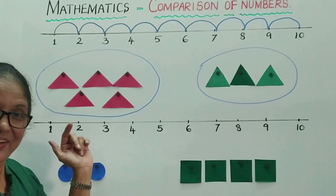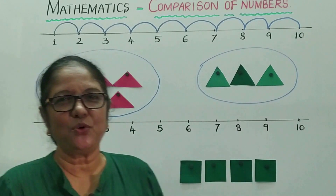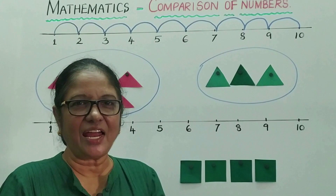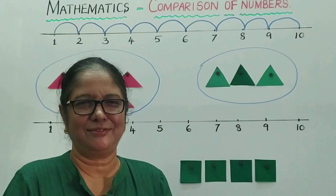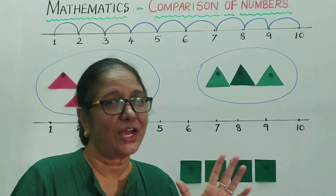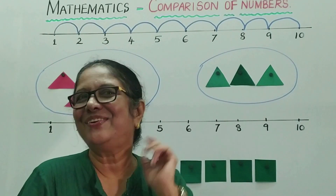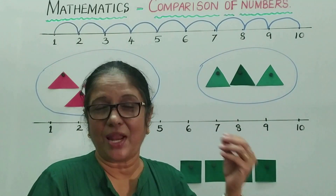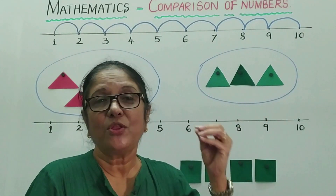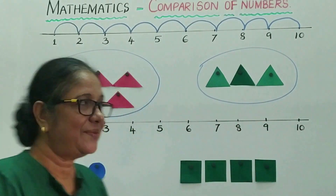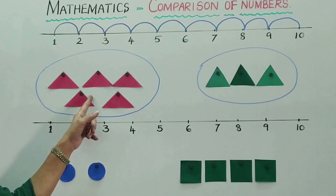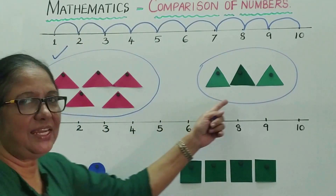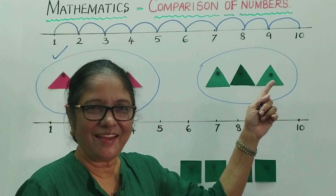3 is less and 5 is more. Supposing mommy gives you 5 chocolates and daddy gives you 2 chocolates — which would you like? Naturally you'll go for 5 chocolates! So 5 is more and 3 is less. Let us give a tick — 5 is more, 3 is less.